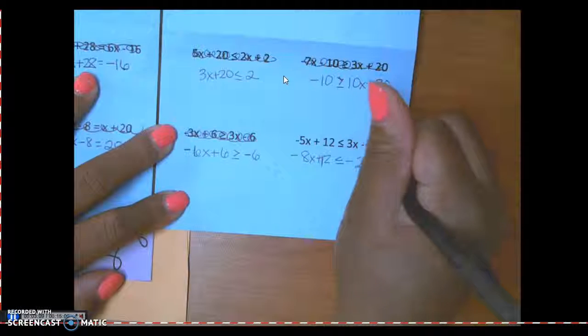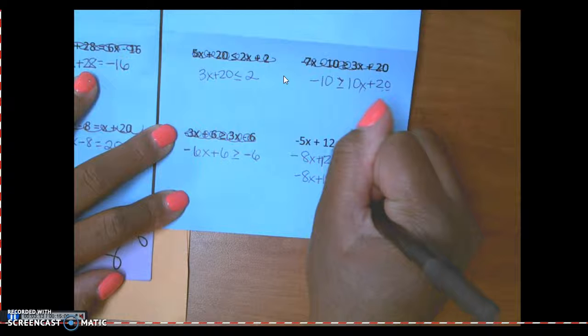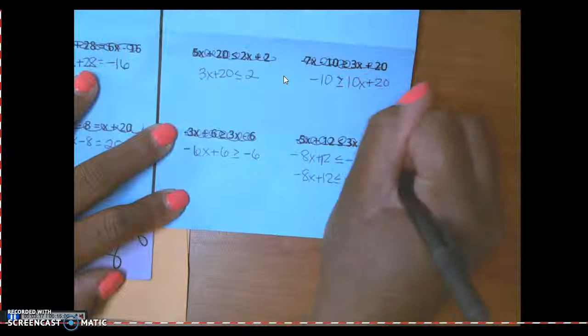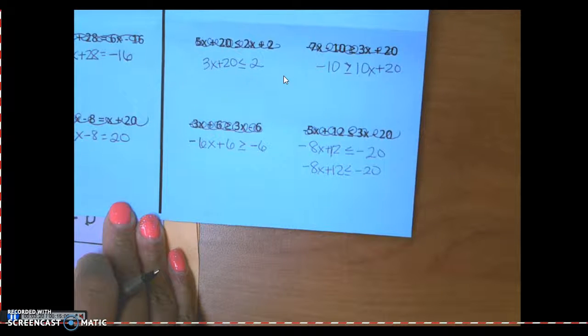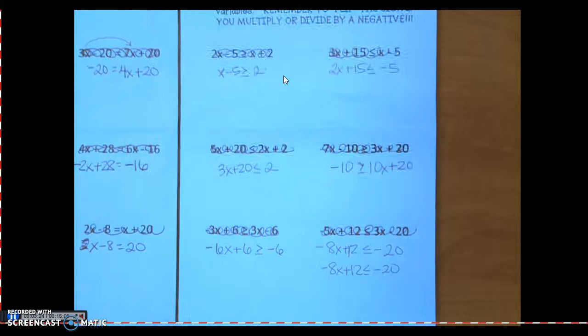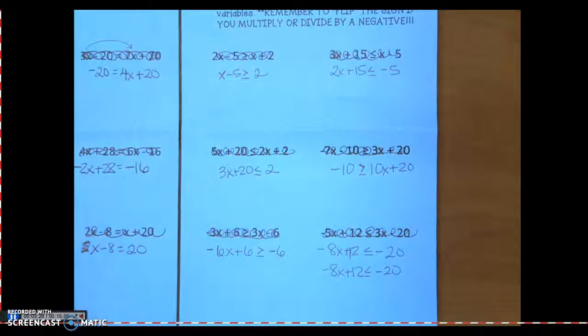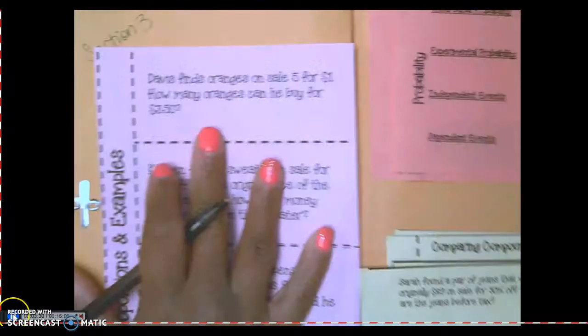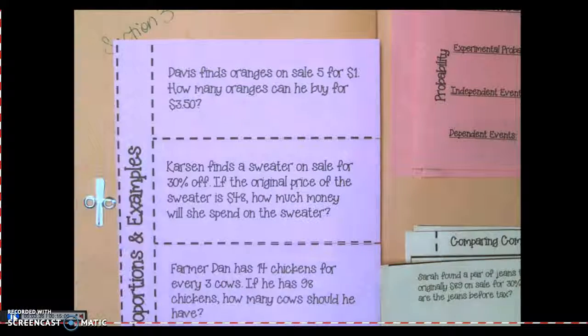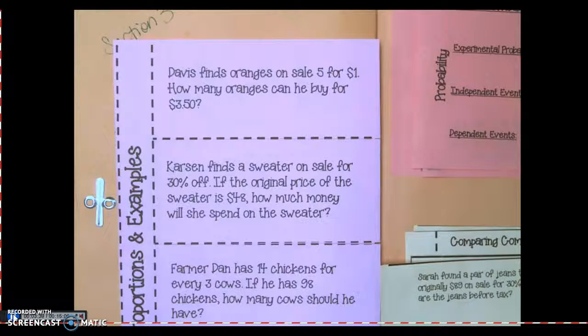12x is less than or equal to negative 20x. Let me rewrite that. There they are, please write them down. And then refer to your note on how to solve those. All right, this section is on proportions and solving for the missing value.